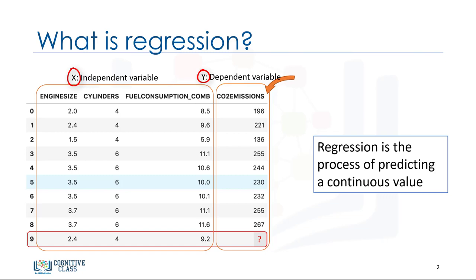A regression model relates y, or the dependent variable, to a function of x, i.e. the independent variables. The key point in regression is that our dependent value should be continuous and cannot be a discrete value. However, the independent variable or variables can be measured on either a categorical or continuous measurement scale.